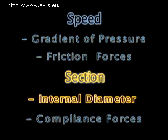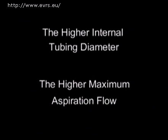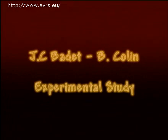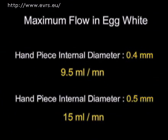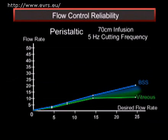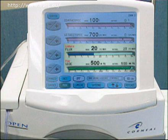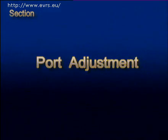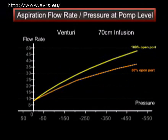Now we arrive at the consequences of the aspiration system's internal diameter and flow control. According to the laws of physics, the greater the diameter, the higher the aspiration flow. This will influence our handpiece choice. Bidet and Colin measured the flow in egg white and found that when the internal diameter of the handpiece went from 0.4 to 0.5 mm, the maximum flow increased 50%. In surgical terms, the greater the diameter, the higher the maximum flow with precise control will be, and thus a quicker central vitrectomy results. On the current vitrectomy machine, the maximum flow is 20 cc per minute. The possibility of decreasing the opening of the port makes it possible to also decrease the maximum flow, and experimentation showed that a reduction of 70% of the port equally decreased the maximum flow.